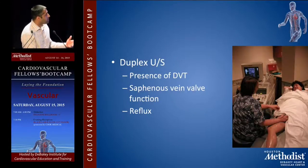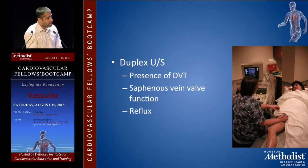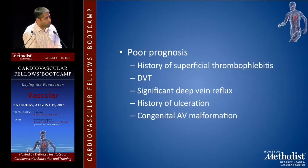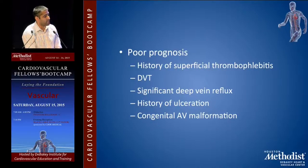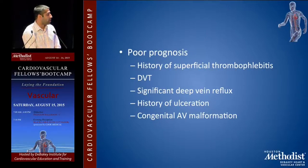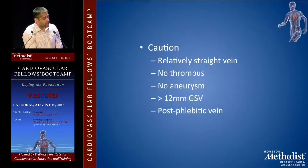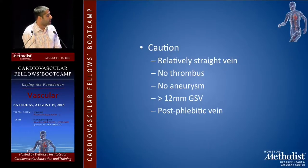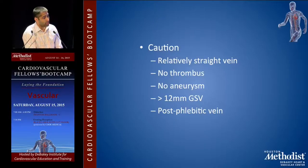You can identify DVT on ultrasound and see saphenous vein valve function and reflux. Poor prognosis in these patients is associated with a history of superficial thrombophlebitis, DVTs, significant deep vein reflux, previous ulceration, or an AV malformation. Things that make treatment more straightforward include a relatively straight vein, no thrombus, no aneurysms, vein size greater than 12 millimeters, and post-phlebitic veins.